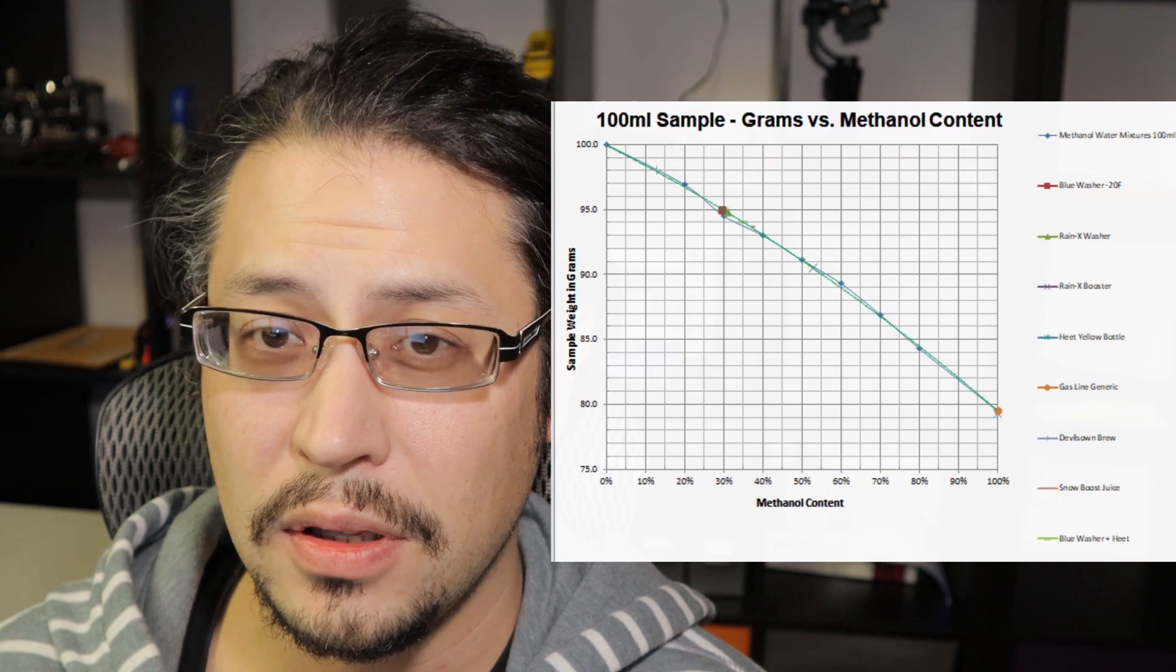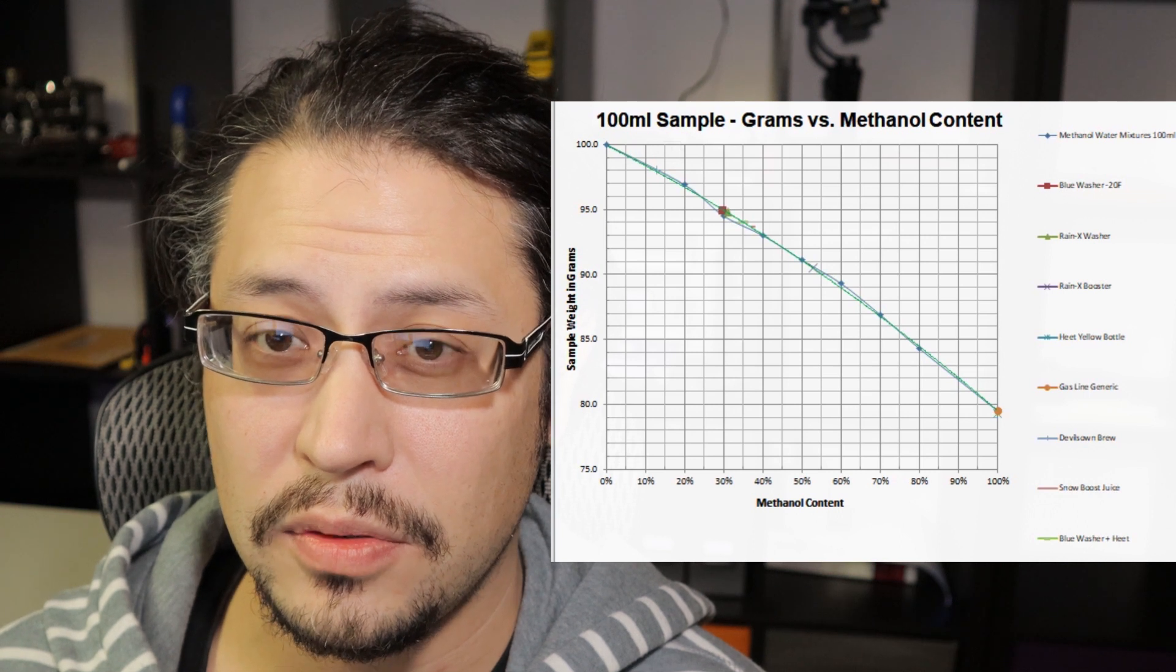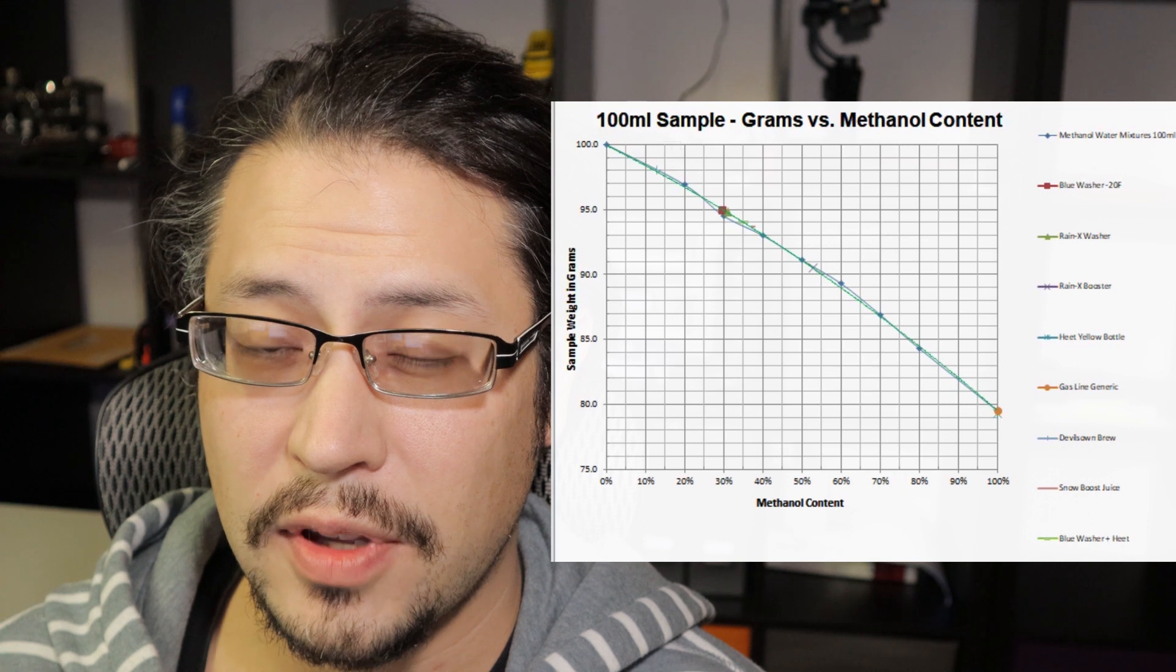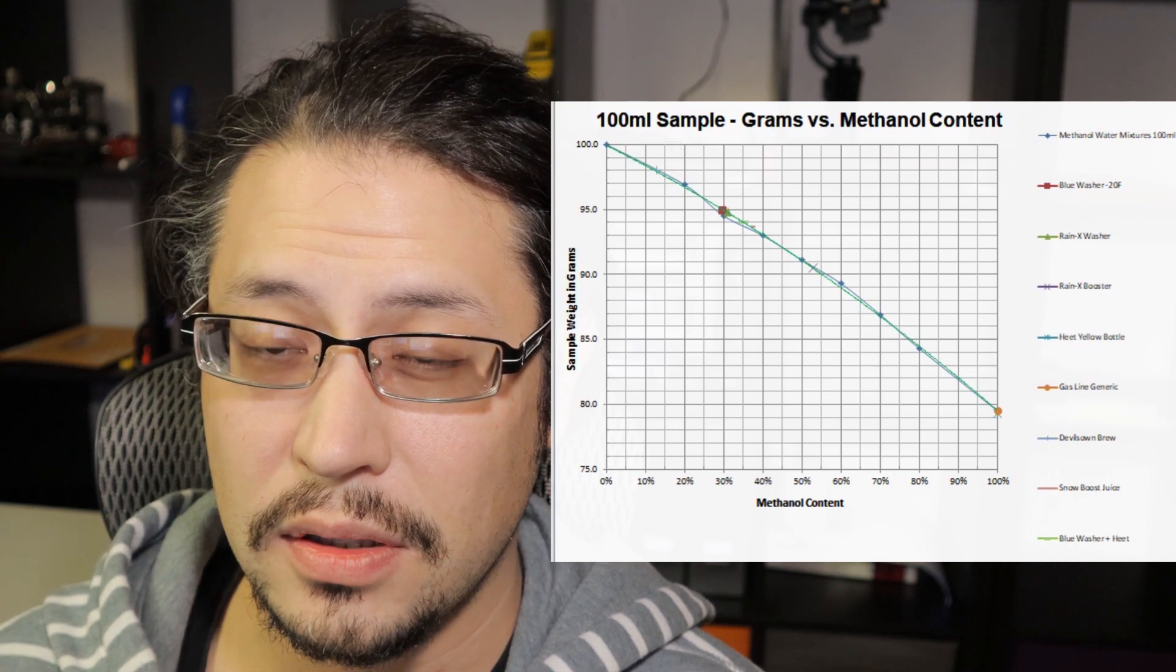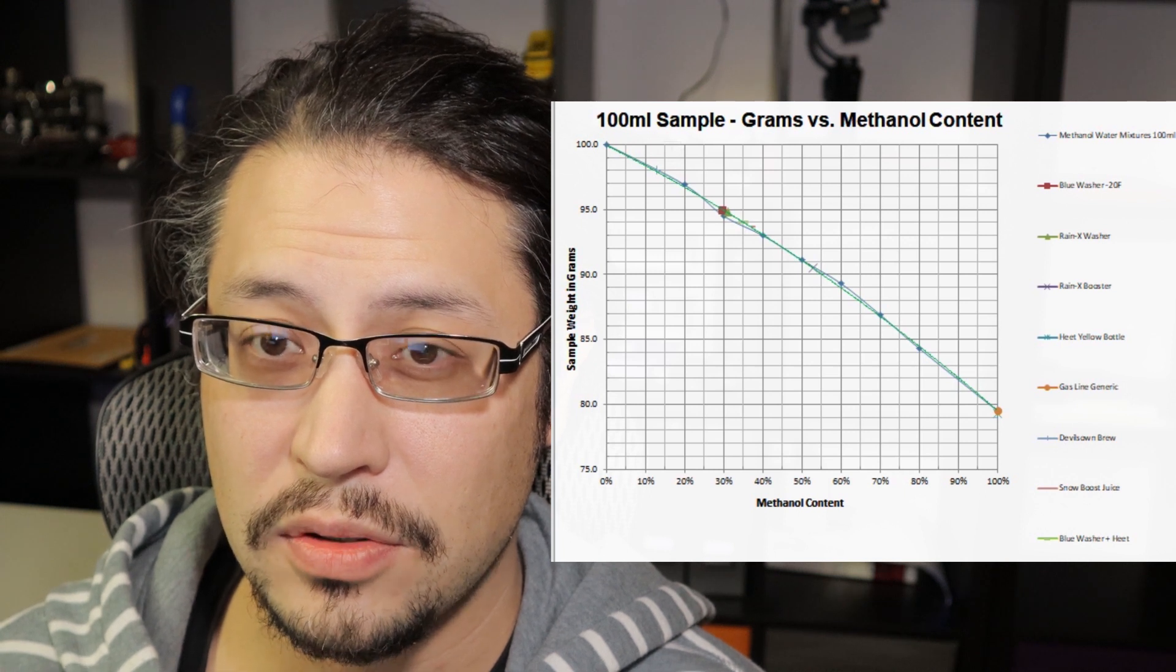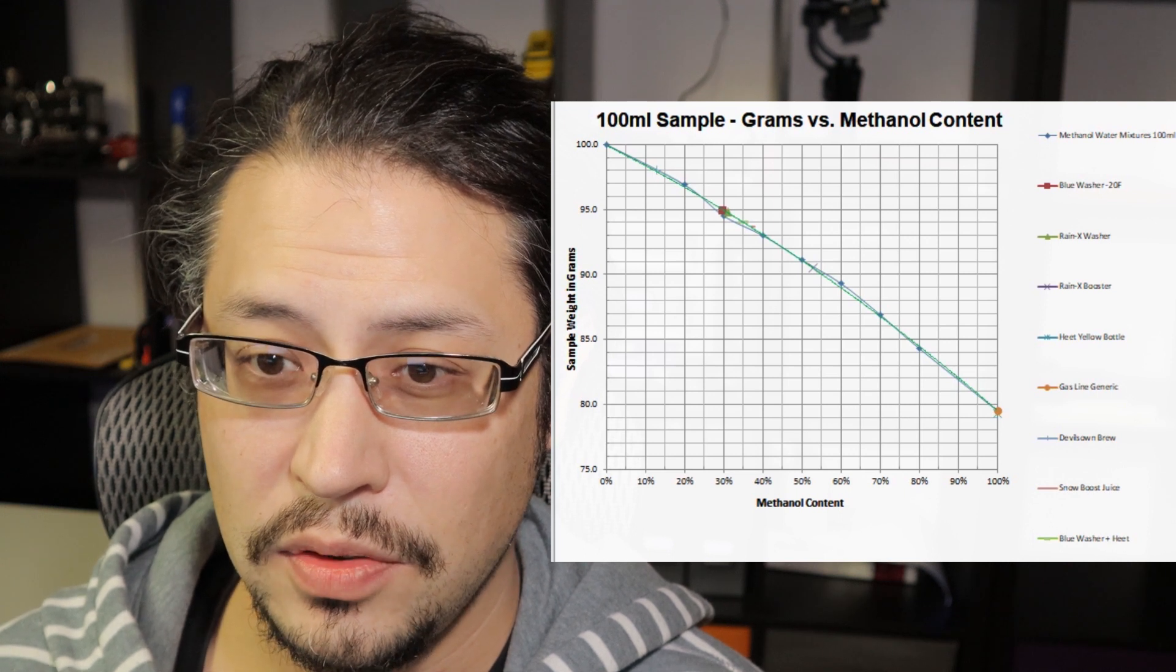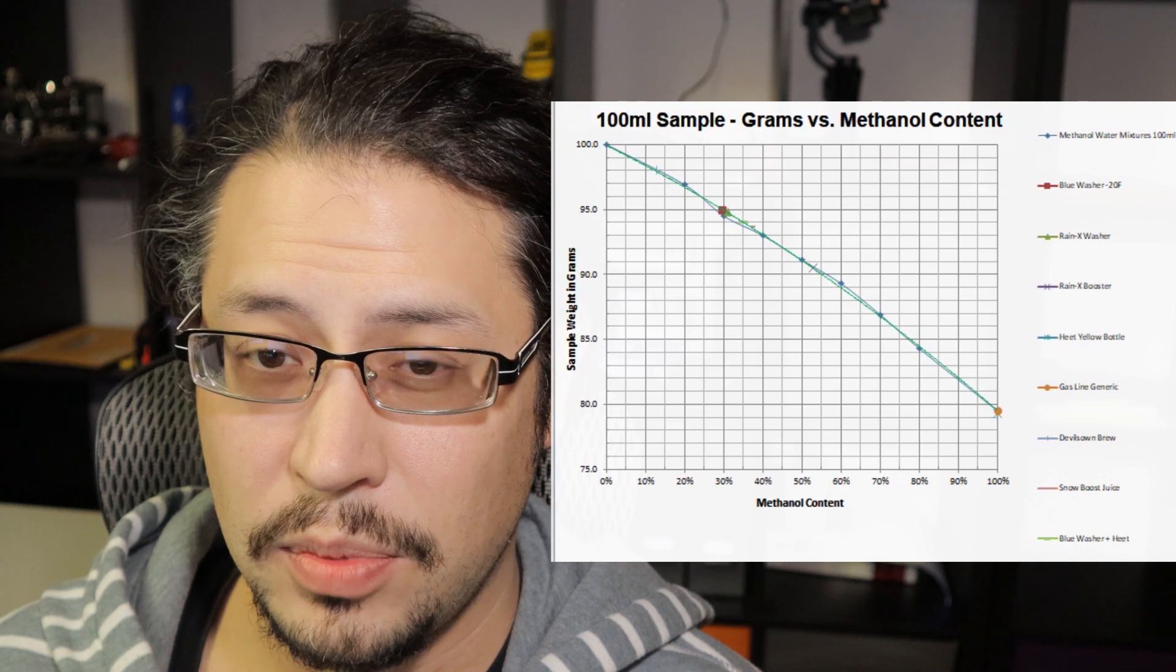There's a kit, there's a link below if you need some help finding one, and also a gram scale. You can pick it up at a local store or on Amazon. You tare it with the empty graduated cylinder, and then you fill it with your mystery sample, and then you can use this chart right here.